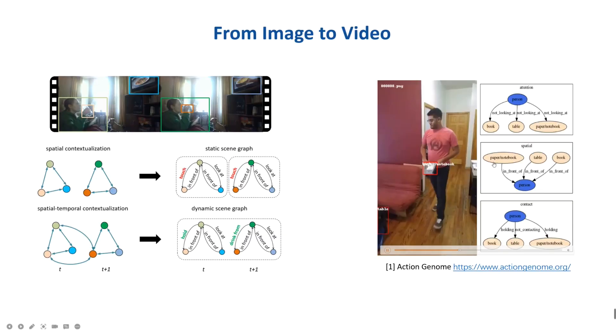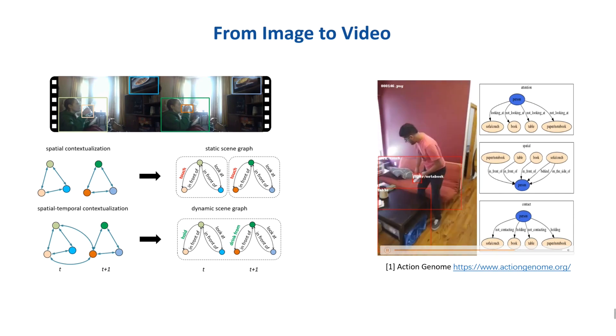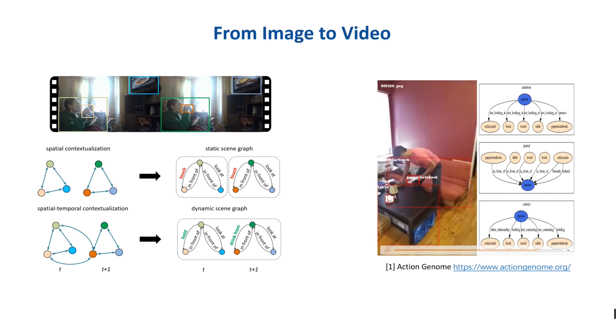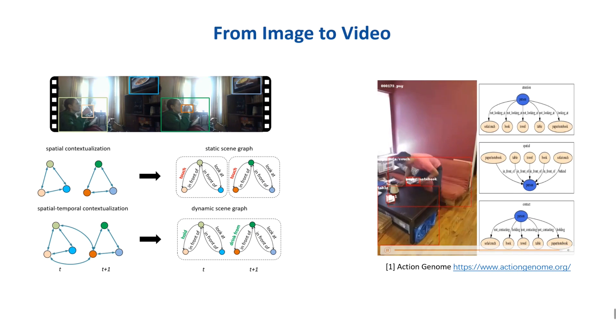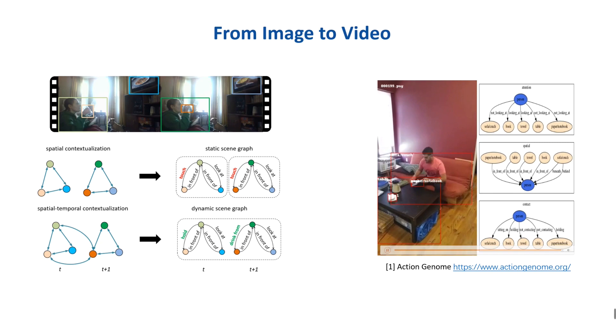Our work extends scene graph generation from images to videos, so-called dynamic scene graph generation. A lot of image-based works predict relationships more accurately by using local spatial context. However, they are not able to understand and utilize temporal dependencies.